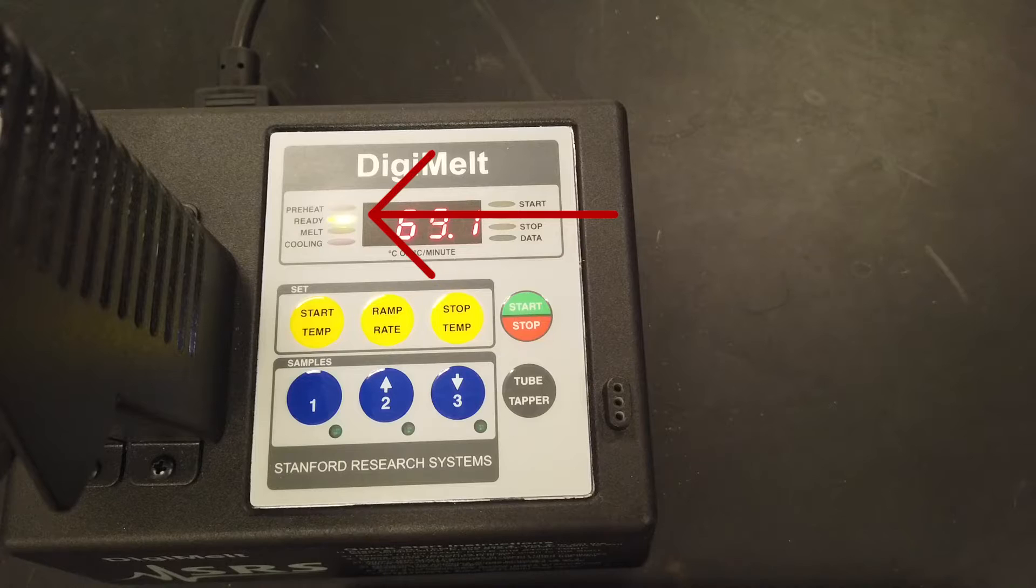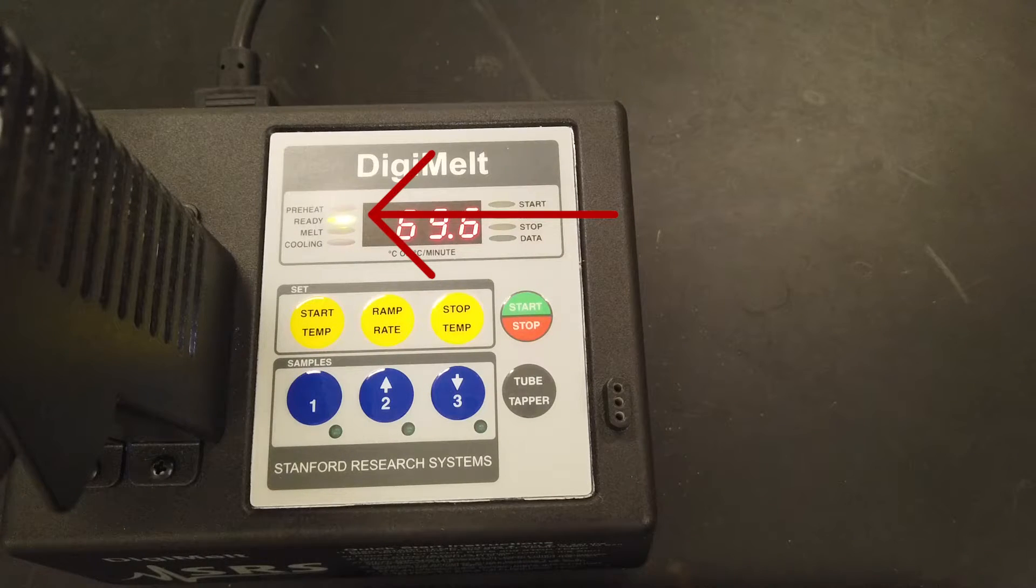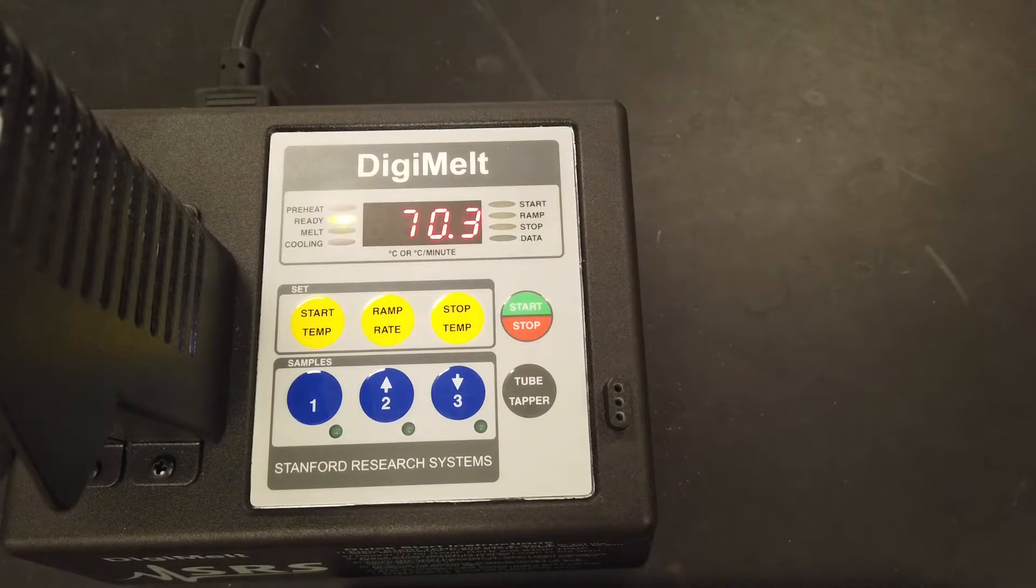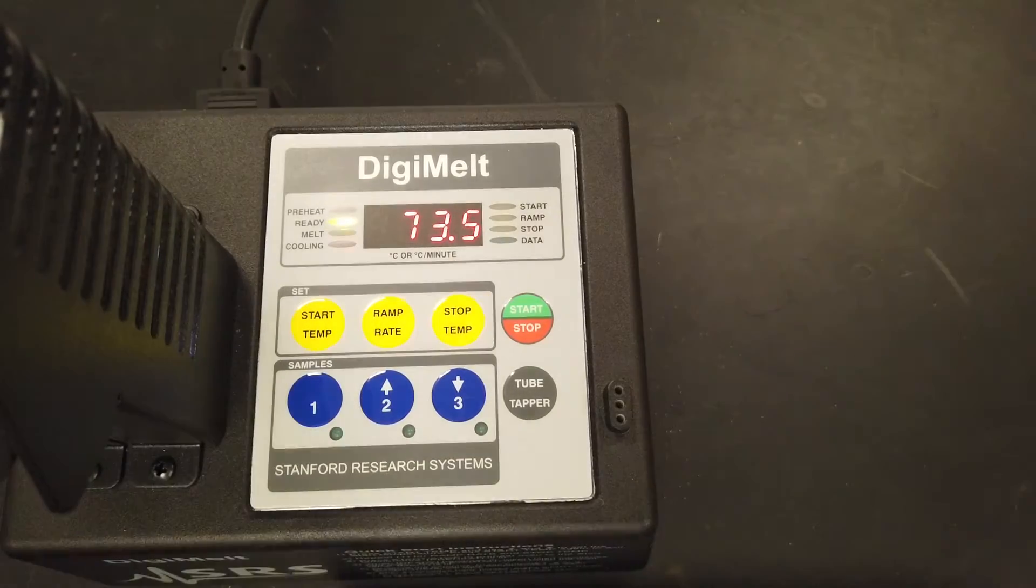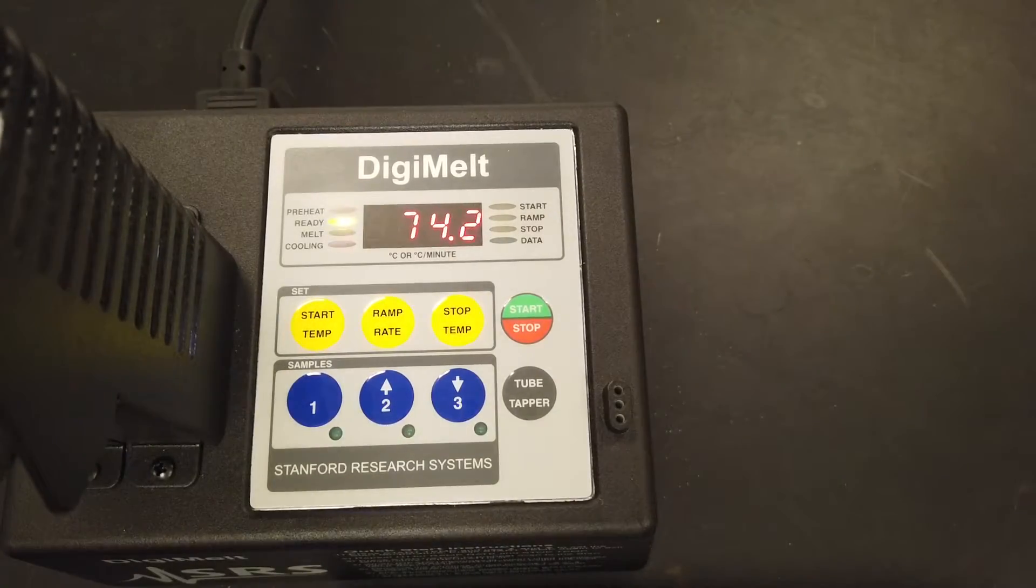Once the apparatus is up to the start temp, a green light will illuminate next to the ready mark. The Melt-Temp will stay ready until you press the start stop button. When you're ready to begin, press the start stop button and the Melt-Temp will switch to melt.